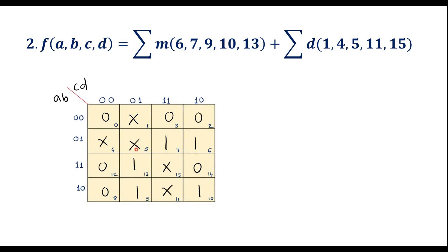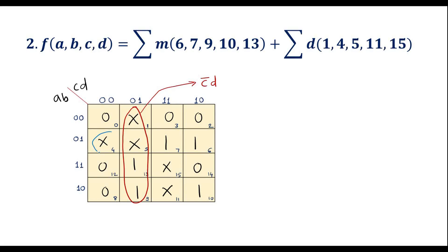Here I can group these two 1s and two don't-cares together as a quad. The column values are 0 and 1 — 0 is with respect to c-bar and 1 is with respect to d — giving the value c-bar·d. Now these two 1s can be grouped with don't-cares to form another quad with value a-bar·b.